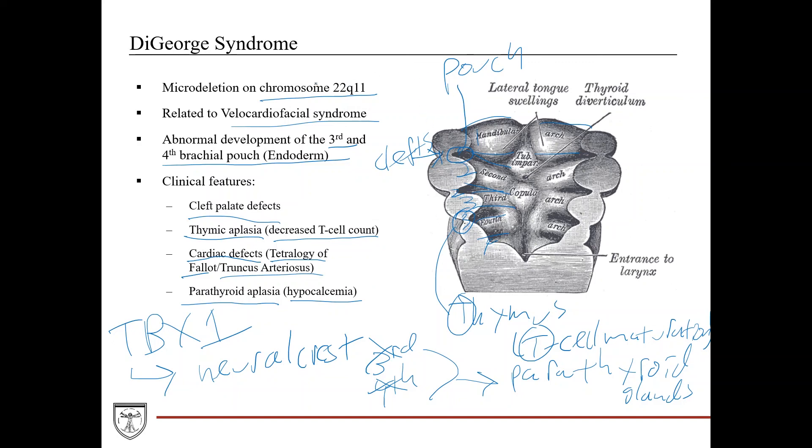So the key takeaway is, you know, chromosome 22q11 could be definitely asked on an exam. Third and fourth pouches, because of that, they have decreased thymus formation. As a result, decreased T cell count, immunocompromised. Third and fourth contribute to parathyroid gland, parathyroid aplasia, hypocalcemia, and then cardiac defects, specifically tetralogy of fallot and truncus arteriosus.